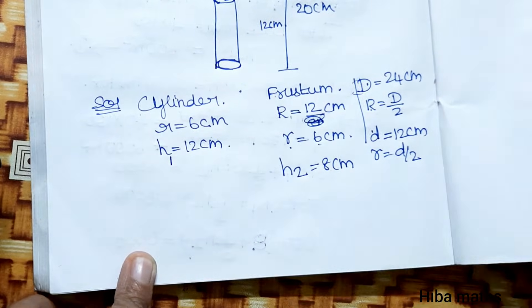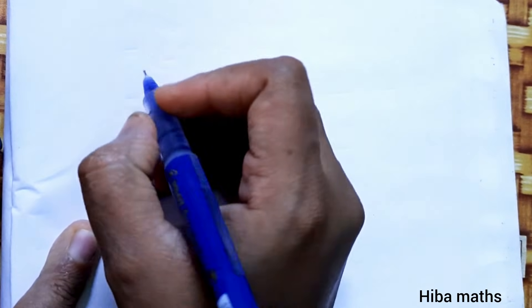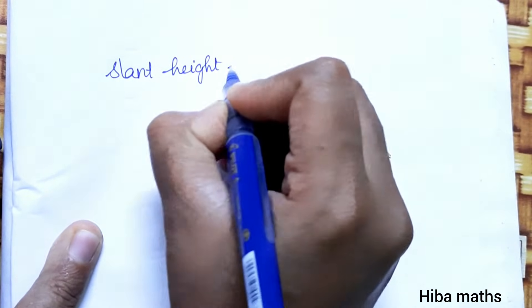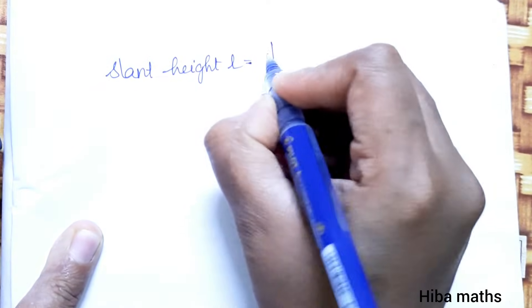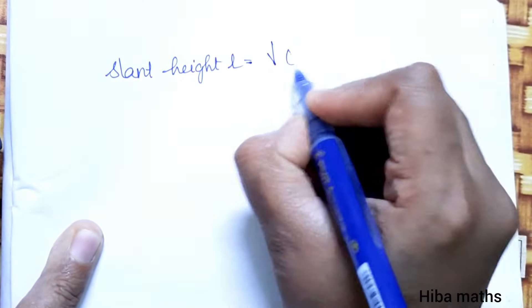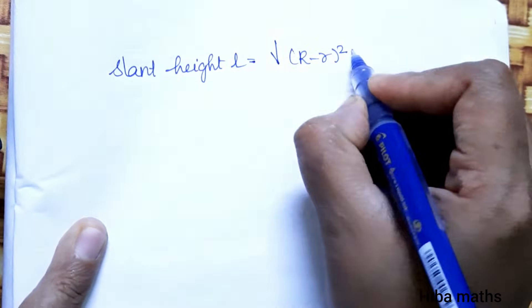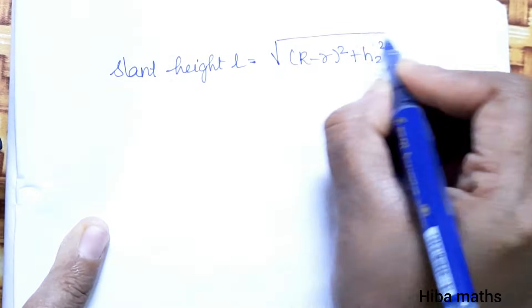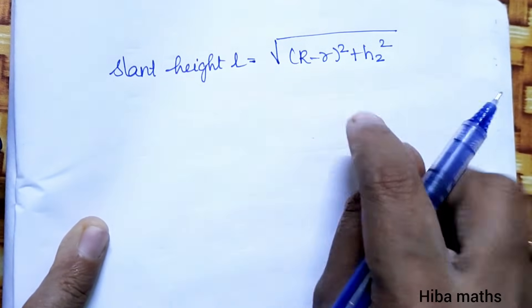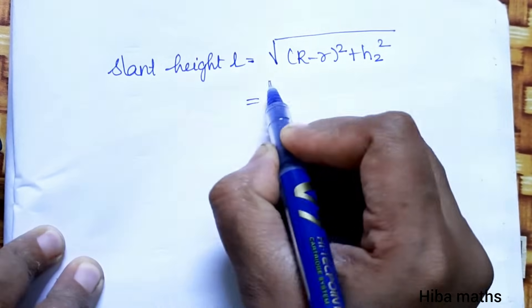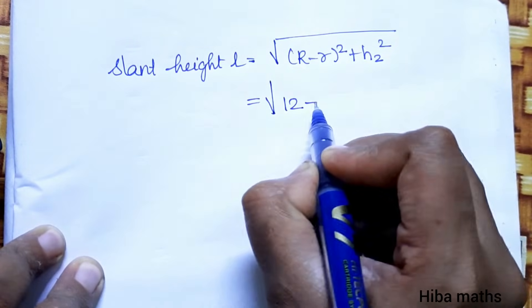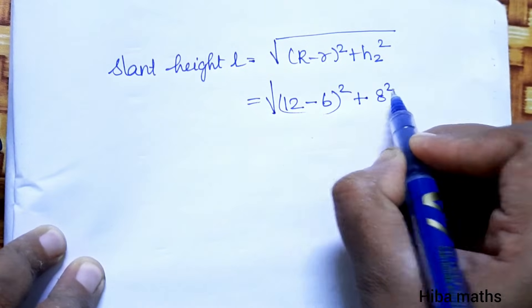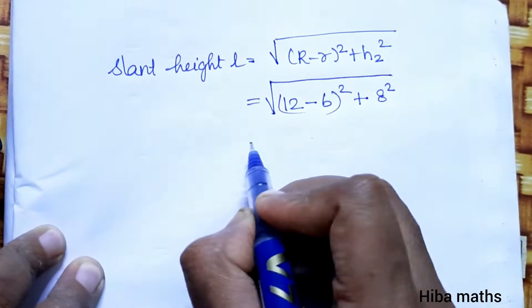Outer surface area formula: curved surface area of frustum is π L equals π times root of (capital R minus small r) squared plus h squared, where h is the frustum height.